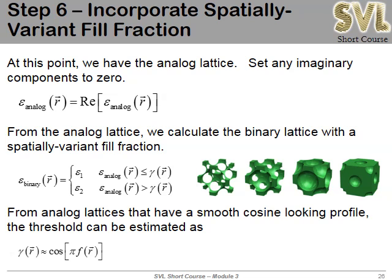Once we have the analog lattice, we extract the real part — the imaginary component should be near zero but numerical noise can introduce it. This gives our actual analog lattice. We can then apply a threshold to spatially vary fill fraction. If the grayscale unit cell is close to a cosine profile, we can estimate the threshold needed to realize a given fill fraction. All of this is done on the high-resolution grid.